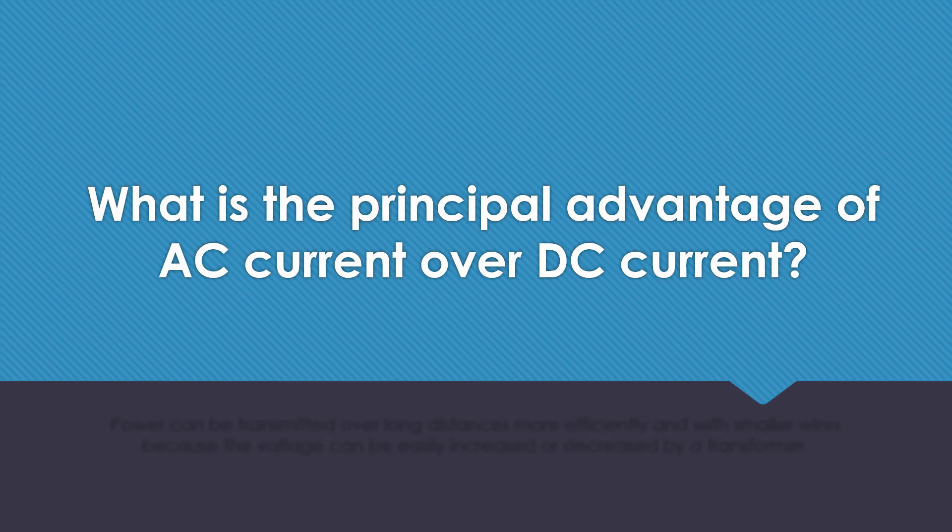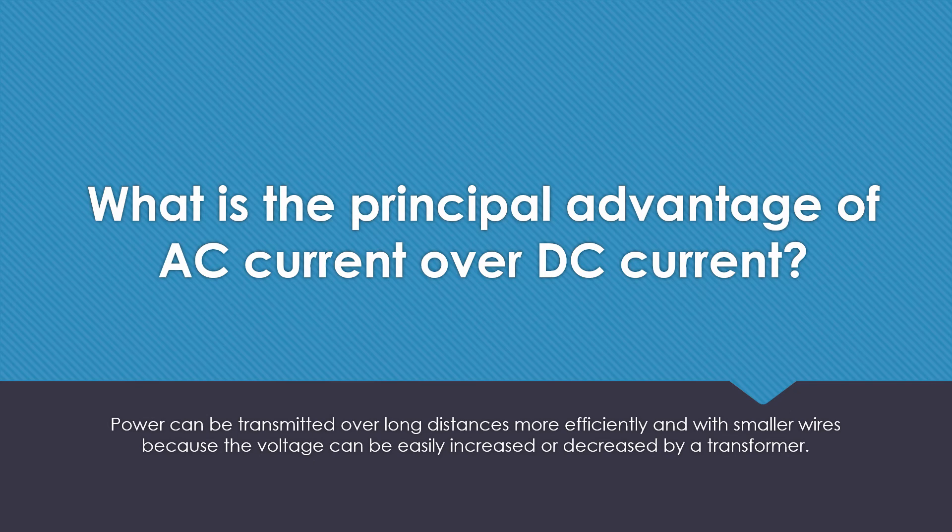What is the principal advantage of AC current over DC current? Power can be transmitted over long distances more efficiently and with smaller wires because the voltage can be easily increased or decreased by a transformer.